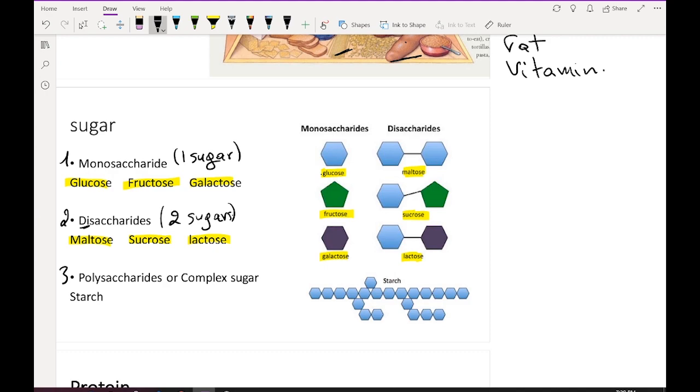Disaccharides are formed of two molecules. Maltose is formed from two molecules of glucose. Sucrose is formed from one molecule of glucose and one molecule of fructose. Lactose is formed from one molecule of glucose and one molecule of galactose.